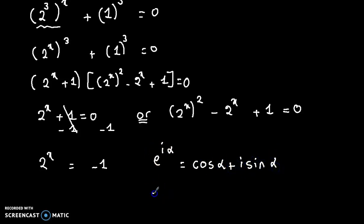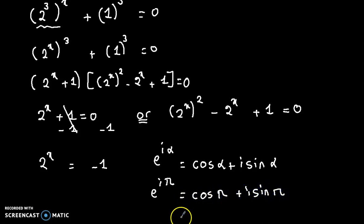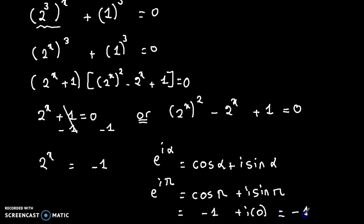Recall that e to the power i alpha is equal to cosine alpha plus i sine alpha. Now let's see e to the power i pi: it equals cosine pi plus i sine pi. Cosine pi equals minus 1, and i sine pi equals 0, so it equals minus 1.